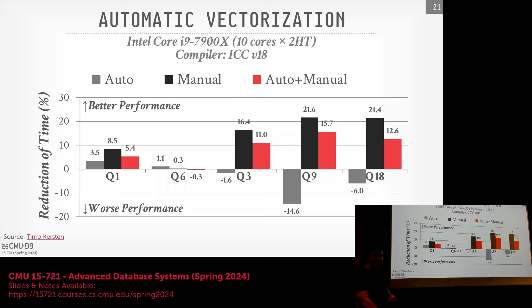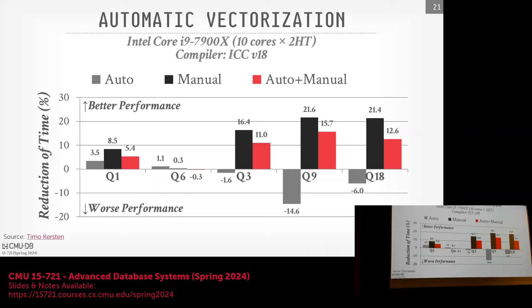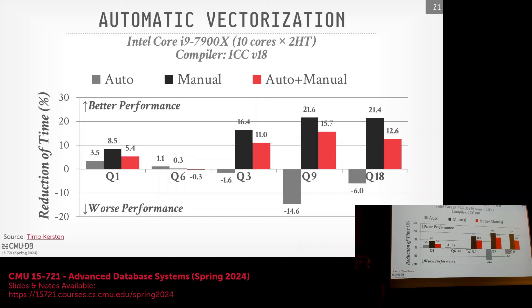There's a footnote in the paper explaining why some queries perform worse with vectorization: newer CPU versions downclock when you use AVX512 instructions. Some compilers will actually avoid auto-vectorizing to AVX512 and instead use AVX2 specifically because of this downclocking issue.